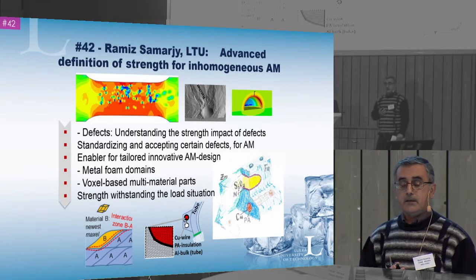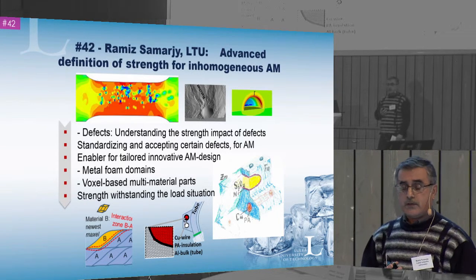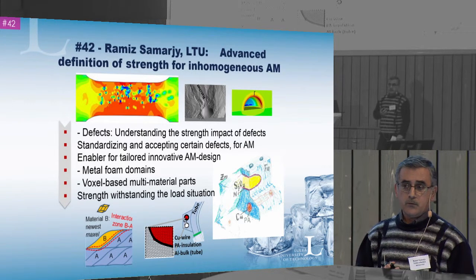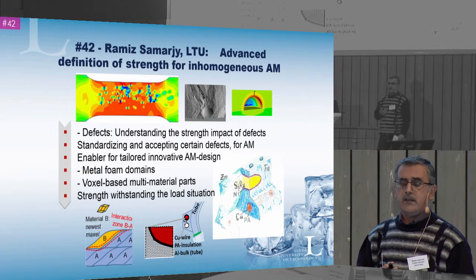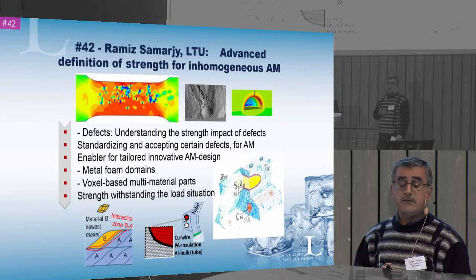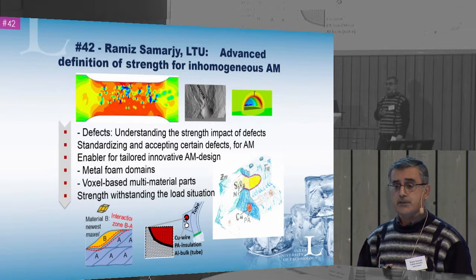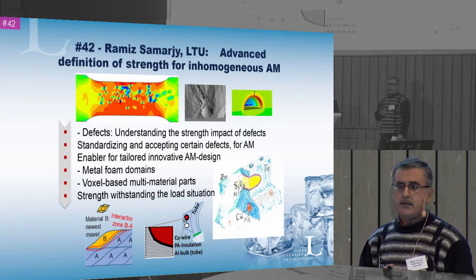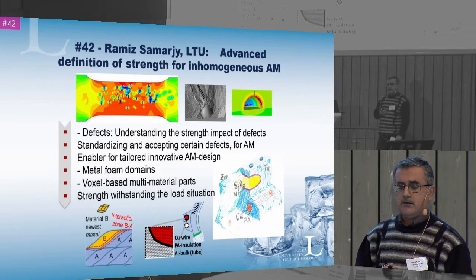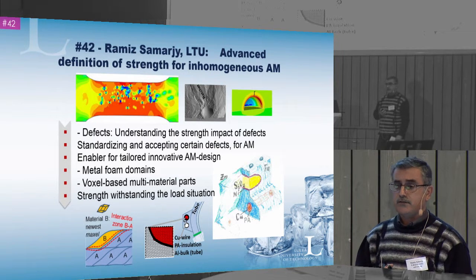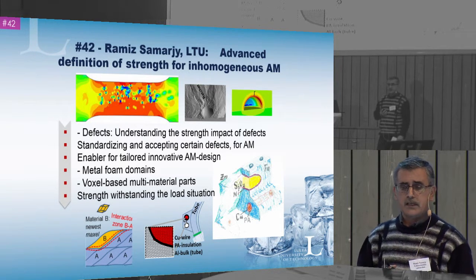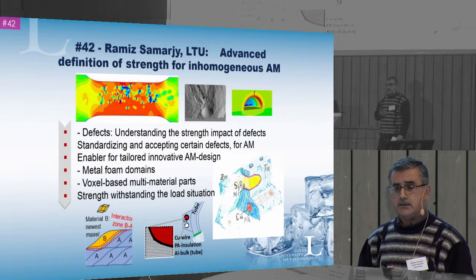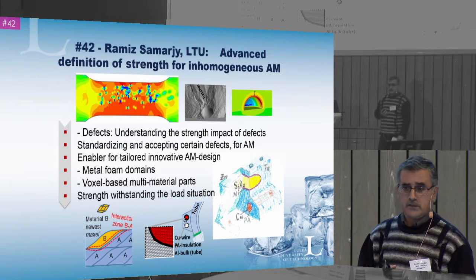One difference between the established products based upon the additive manufacturing and the metal sheet is that involving such defects and imperfections like, for example, porosity and lack of fusion.